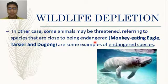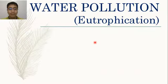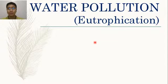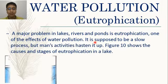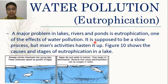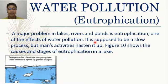We have the dugong as an example. Moving on to water pollution: a major problem in lakes, rivers, and ponds is eutrophication. It is one of the effects of water pollution and is supposed to be a slow process, but human activities have sped up the process of eutrophication.